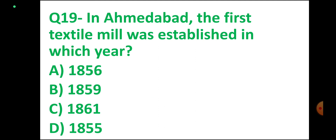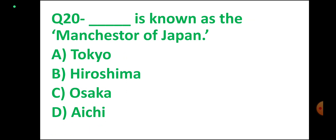Question number 19. In Ahmedabad, the first textile mill was established in — the correct option is 1861. Option C. Correct.